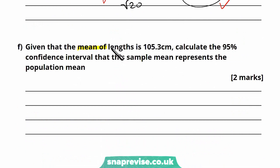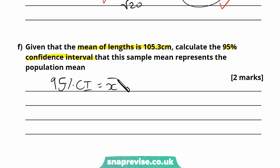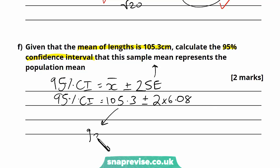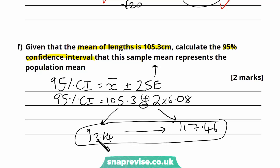The next part says: given that the mean of the heights is 105.3 cm, calculate the 95% confidence interval that this sample mean represents the population mean. The 95% confidence interval is the mean plus or minus two standard errors. Using the standard error of 6.08 calculated previously: the lower boundary is 105.3 minus (2 × 6.08) = 93.14, and the upper boundary is 105.3 plus (2 × 6.08) = 117.46. You can write that as 93.14 to 117.46.